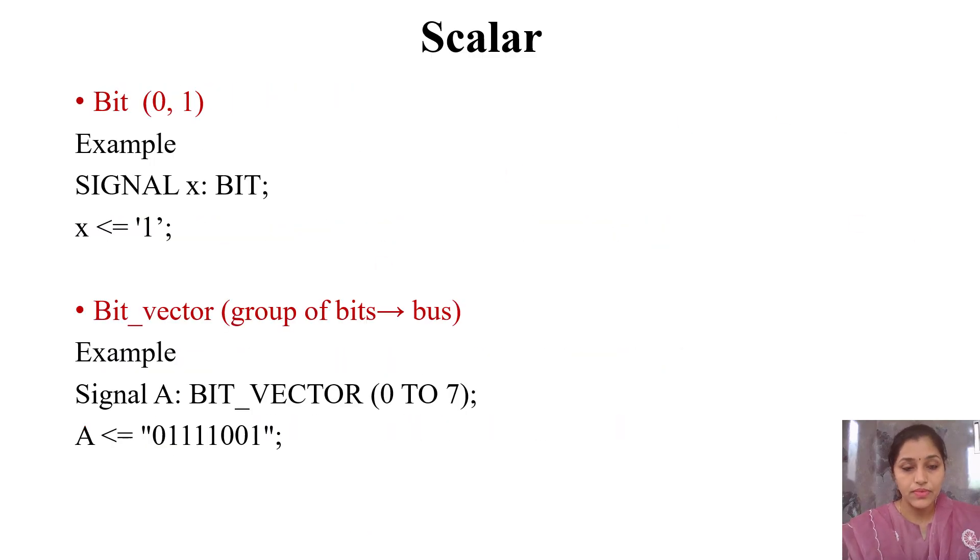Bit is a scalar data type. In binary number system, there are two values: 0 and 1. Bit can have either 0 or 1. For example, signal x is of type bit, meaning x can have either 0 or 1. Here, x is assigned as 1 using the assignment operator.